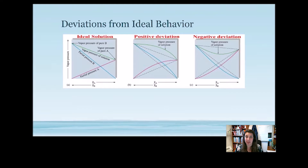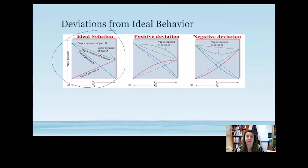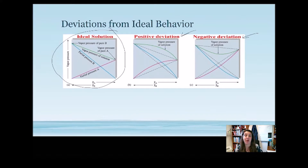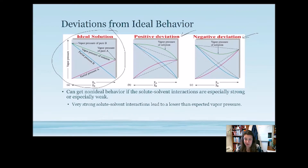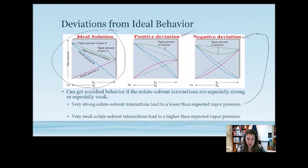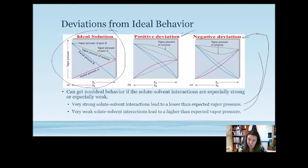Looking at deviations from ideal behavior: a positive deviation is when vapor pressure is greater than expected from Raoult's Law, and a negative deviation is when vapor pressure is lower than expected. When we have non-ideal behavior, solute-solvent interactions are especially strong or weak. Strong solute-solvent interactions produce a lower-than-expected vapor pressure (negative deviation); weak solute-solvent interactions produce a higher-than-expected vapor pressure (positive deviation).